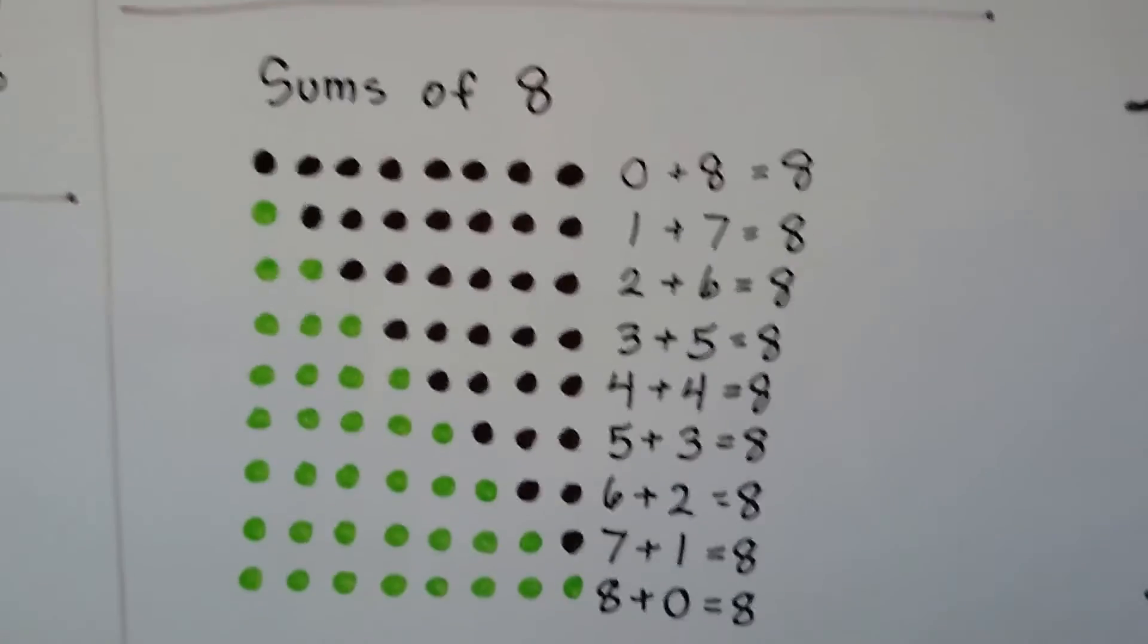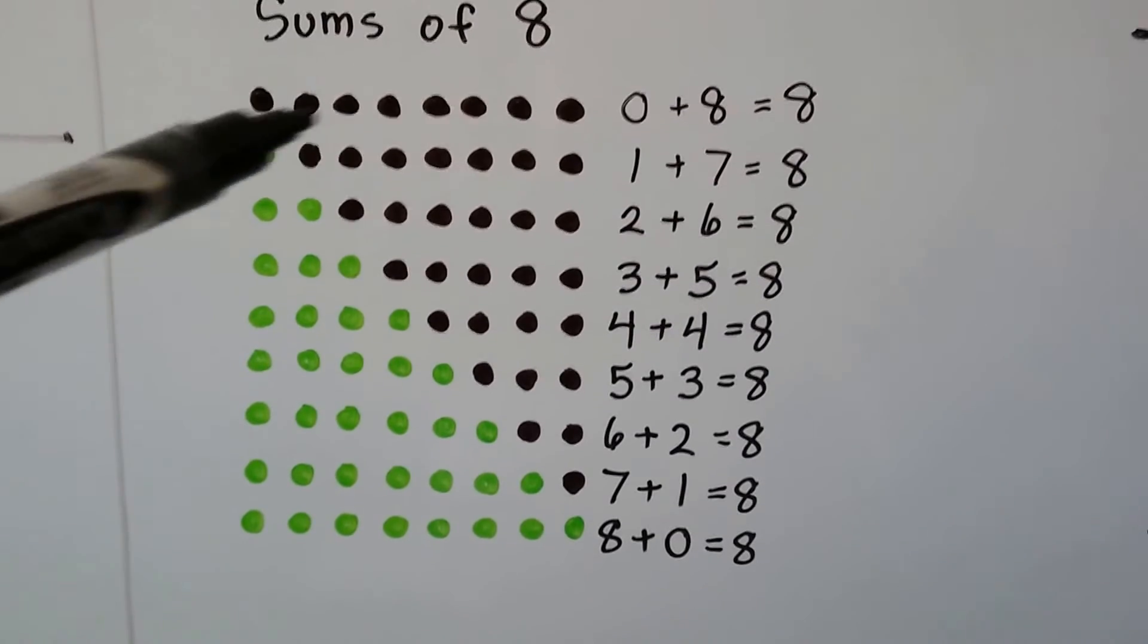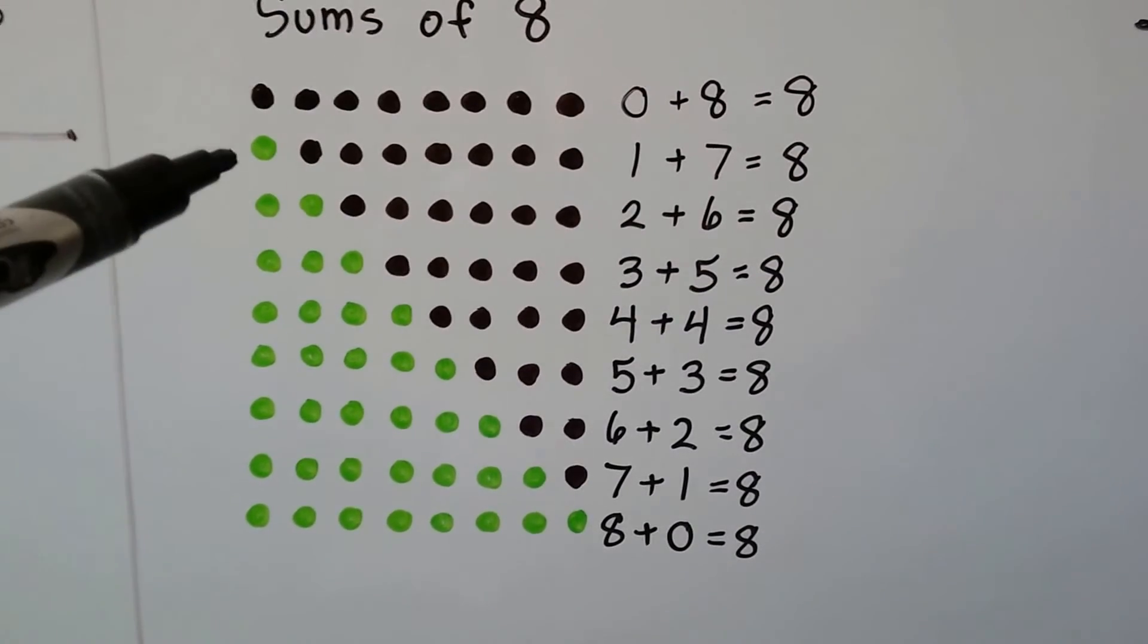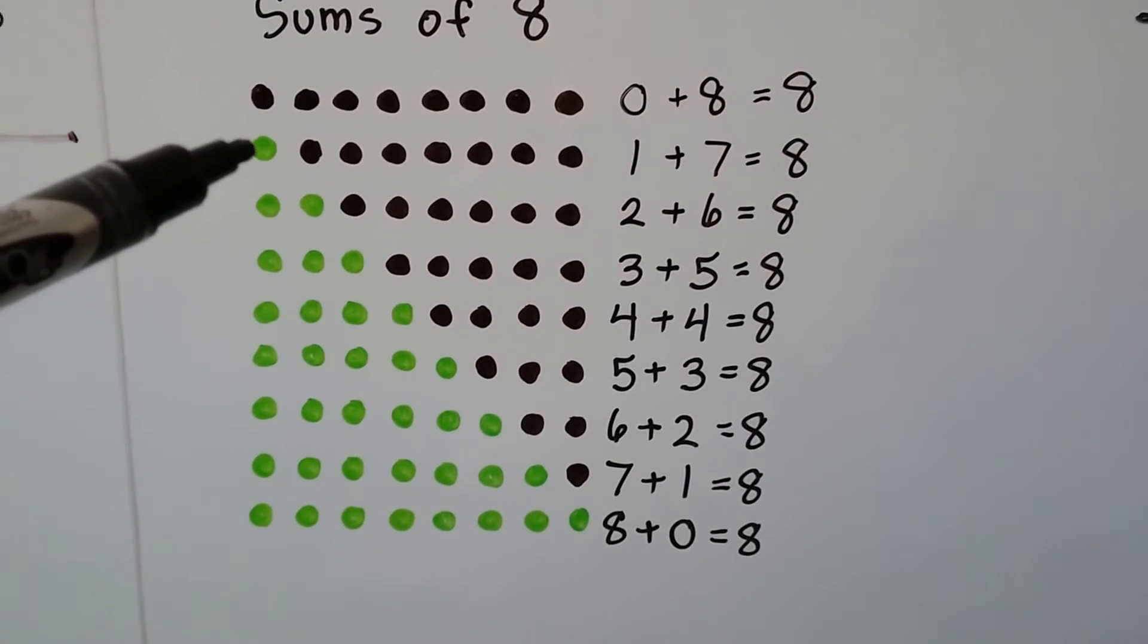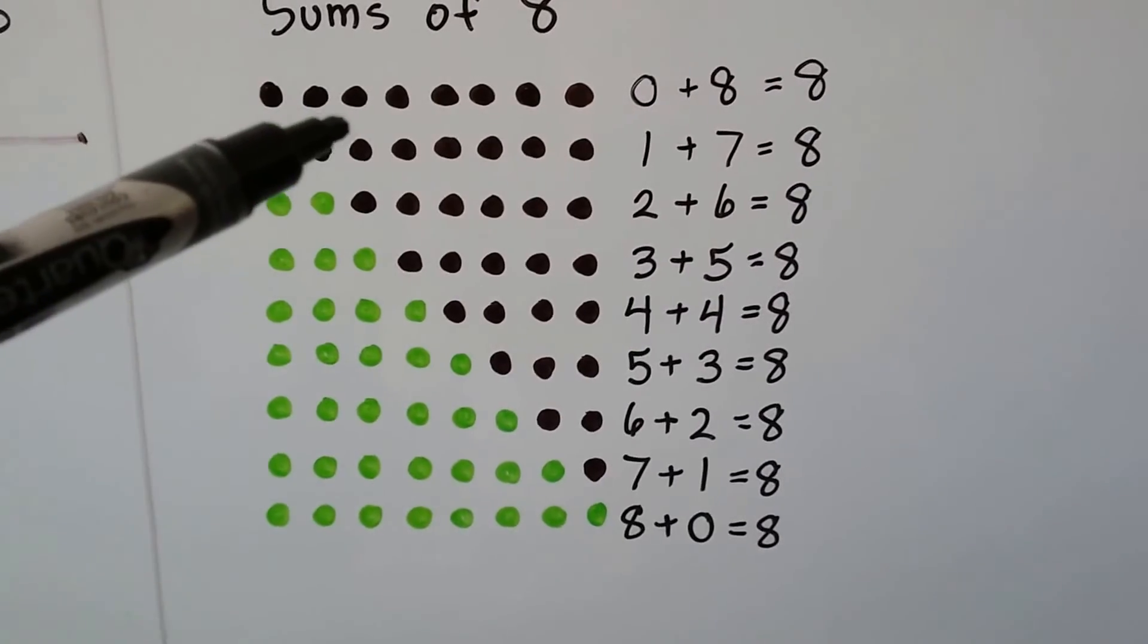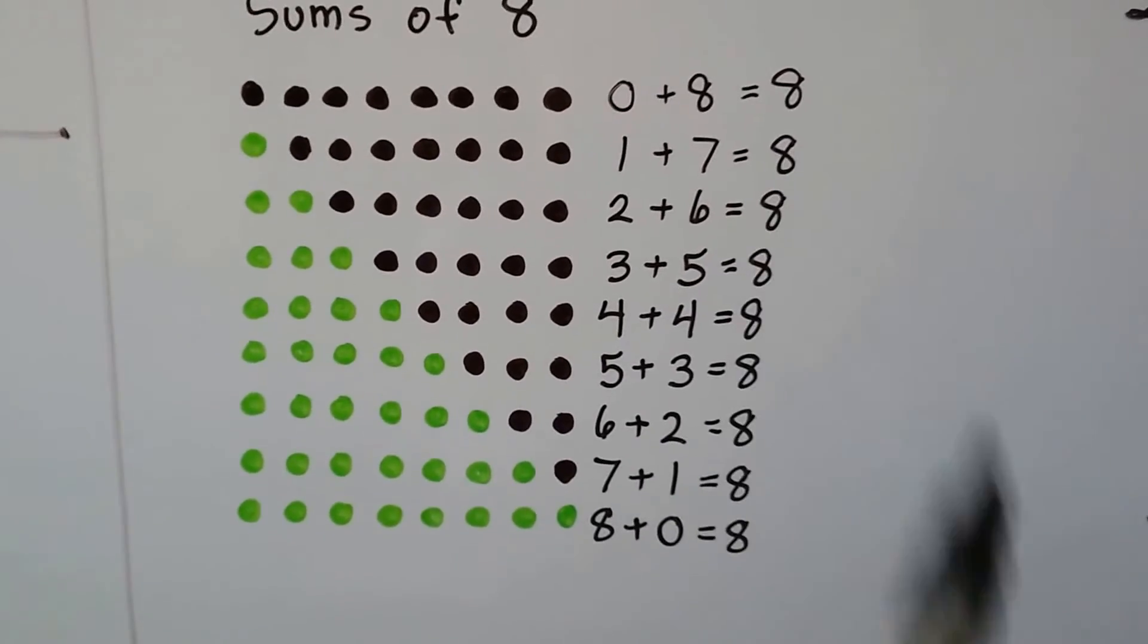Same thing for the sums of eight. We have eight brown dots. Then we have one green dot and seven brown dots. That equals eight.